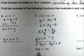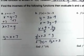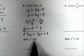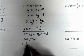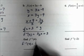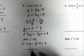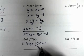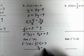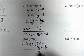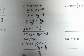Now evaluate f inverse of 4. Take f inverse of x and replace x with 4: f inverse of 4 = ⅓ × 4 + 3 = 4/3 + 3. Converting 3 to thirds gives 9/3, so 4/3 + 9/3 = 13/3. Therefore f inverse of 4 = 13/3.